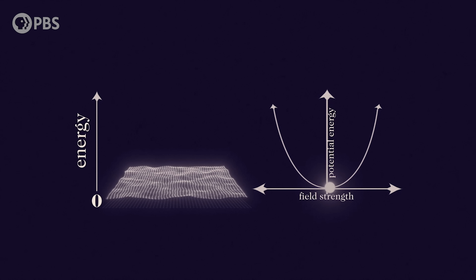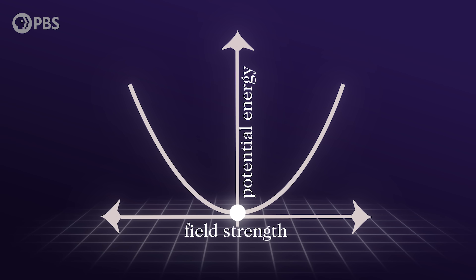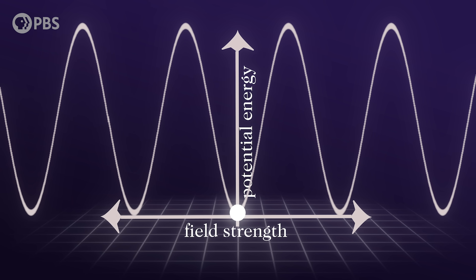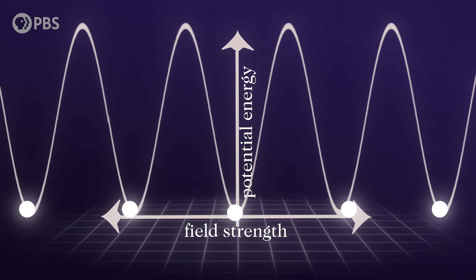And as we saw in previous episodes, the vacuum is a very lively place. Particularly in QCD, where there isn't just one lowest energy state — there are infinite lowest energy states, and the vacuum can hop between these different states. But because they're all the same energy, quantum weirdness allows the QCD vacuum to sort of simultaneously occupy all those states at once.